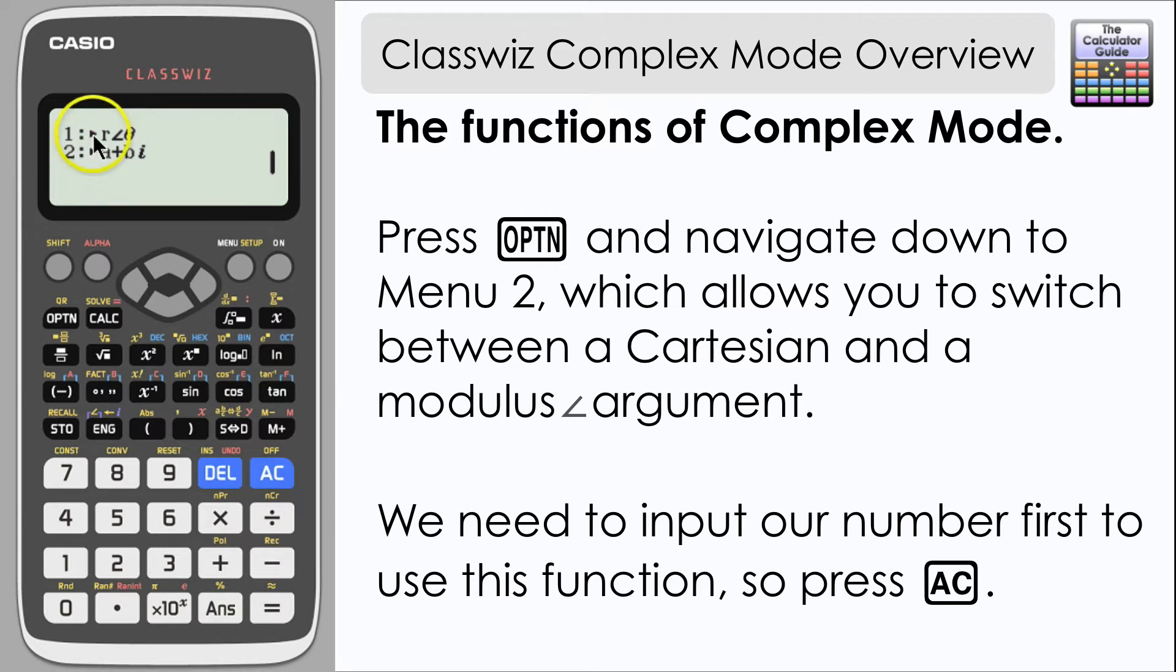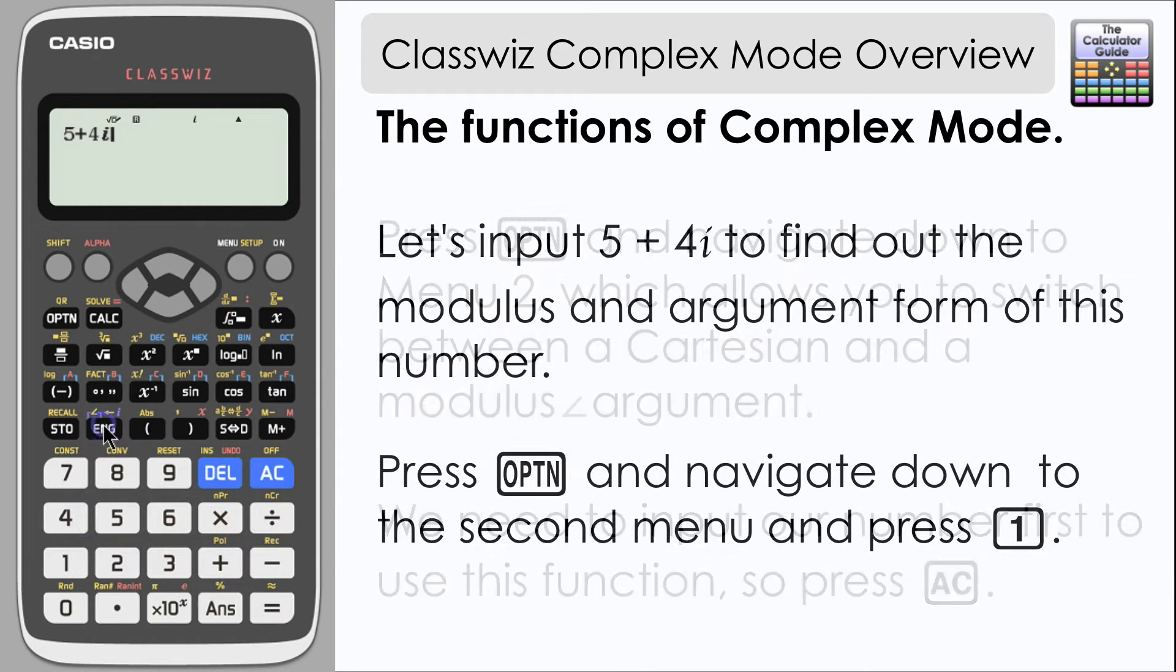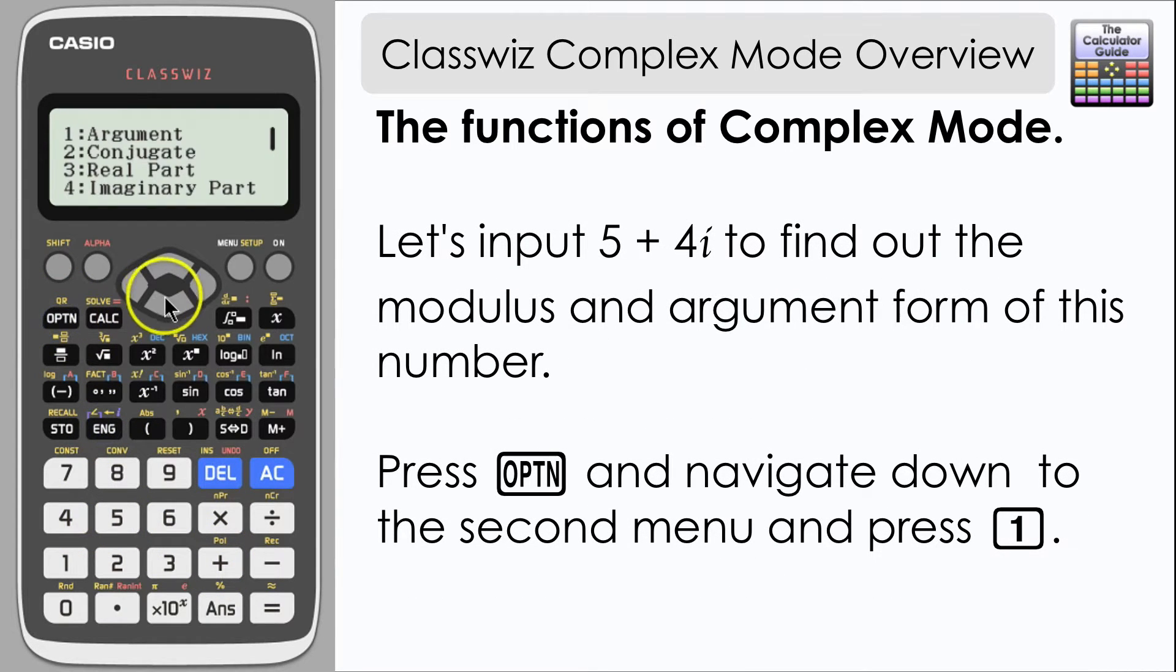Now what we need to do before we use these is input a complex number. So I'm going to input one in Cartesian form which is 5 + 4i, and I'm going to change this to modulus-argument form which is option one on the second part of the menu in the options in complex mode. So if you press 1 here, you'll notice how that is written.